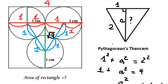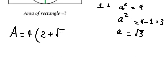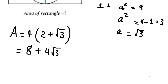So the rectangle dimensions here are: width equals one plus one, which is number two, and height equals the square root of three. Now we can find the area of this rectangle. This is the final answer. Thank you for watching.